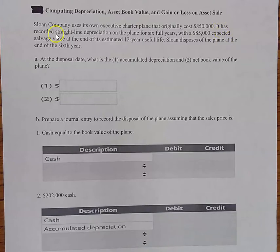It has recorded straight line depreciation on the plane for six full years, so that's important, with an expected salvage value at the end of its estimated 12-year useful life. $85,000 expected salvage value. Salvage value is also sometimes called residual value. So it says Sloan disposes of the plane at the end of the sixth year.